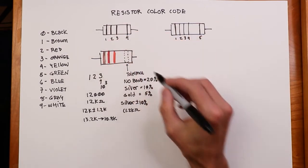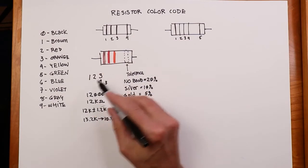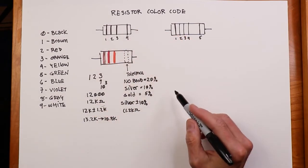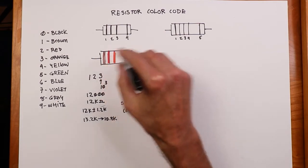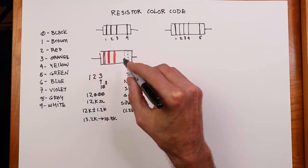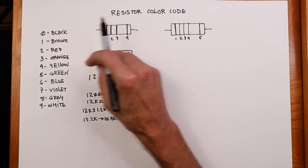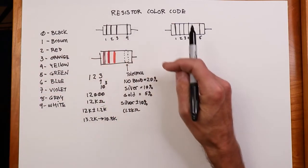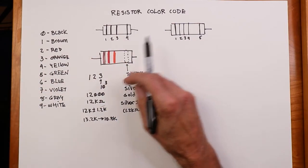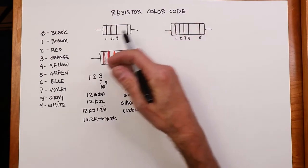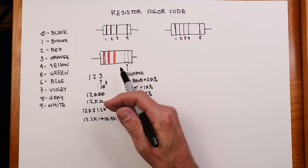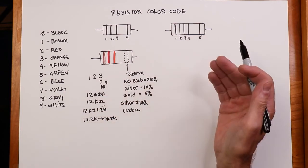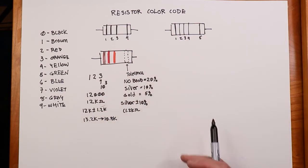We would hope they would all be 12k, but that's just not the case. Generally speaking, the tighter the tolerance is, the more you're going to pay for these things. Remember, the physical size of the resistor has nothing to do with its resistance value. Physical size gives you an indication of the power dissipation. So for the same kind of construction, the physically larger the resistor is, the greater the power handling. In a typical lab, you're probably looking at quarter-watt resistors, very typically.